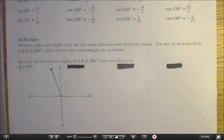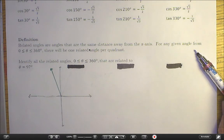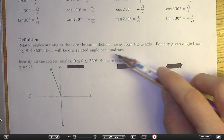Next, we're going to move on to the definition of related angles. Related angles are angles that are the same distance away from the x-axis. For any given angle from 0 to 360 degrees, there will be one related angle per quadrant.